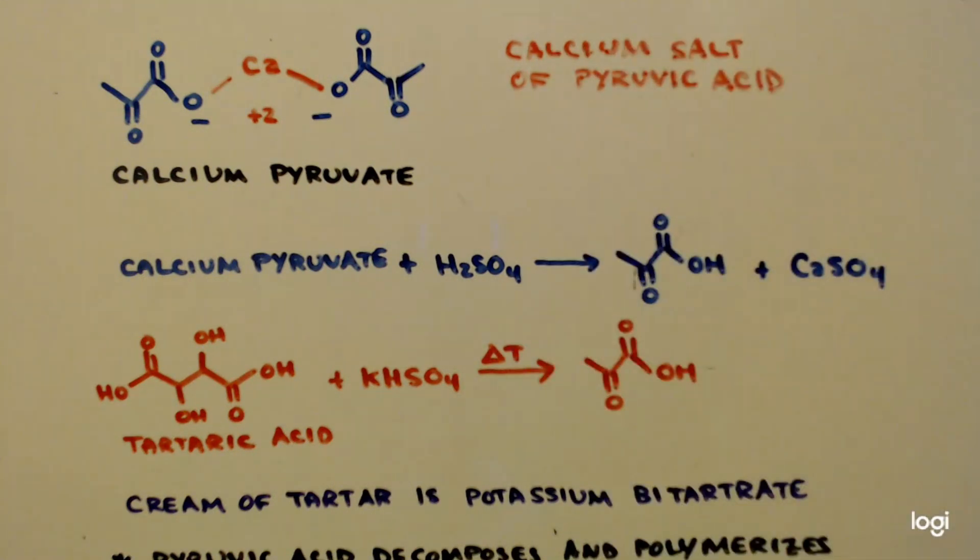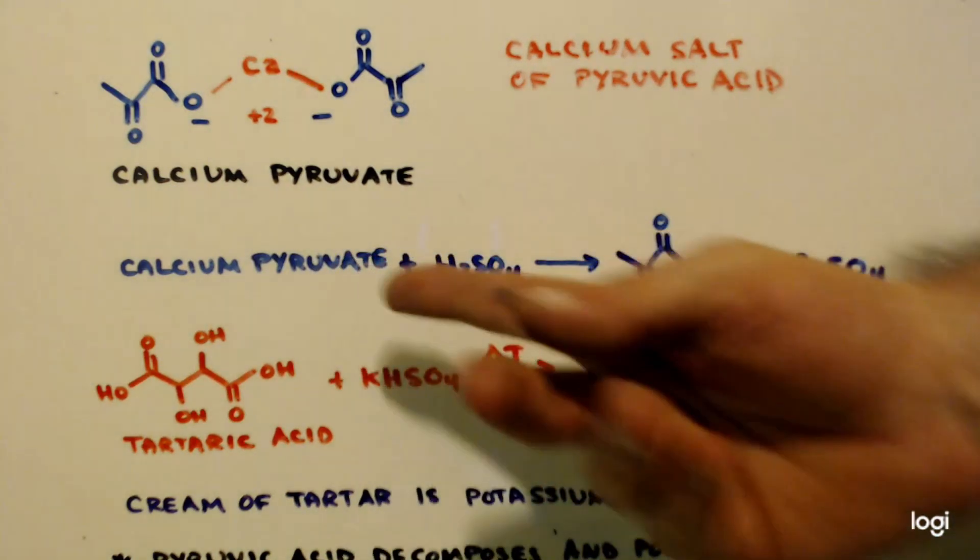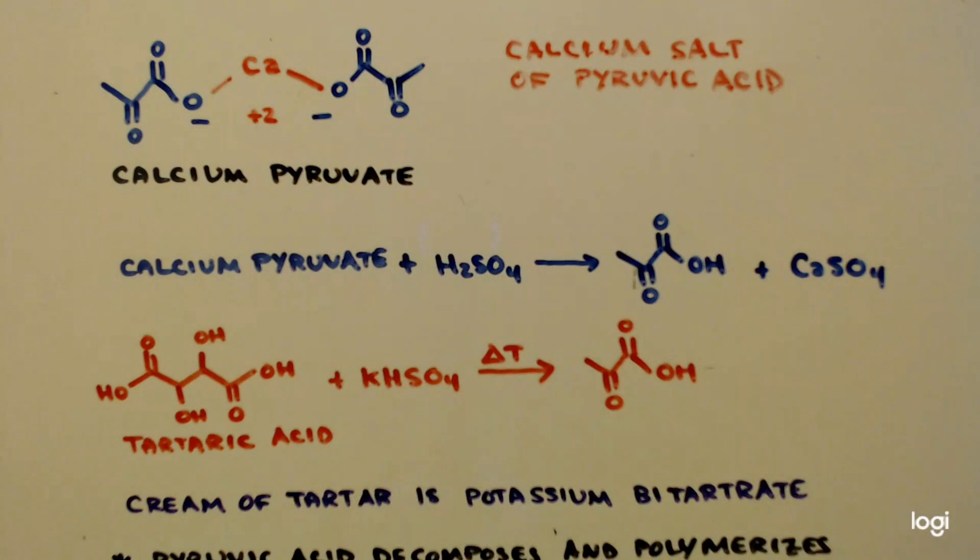What can you do with that? Well, you can make pyruvic acid with it. How do you make an acid? You get the salt of that acid and drip a stronger acid on it. Just like you would do with how do you make acetic acid. You drip a strong acid like sulfuric acid onto a salt like sodium acetate and you will make acetic acid.